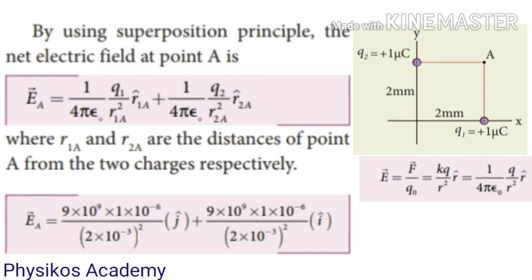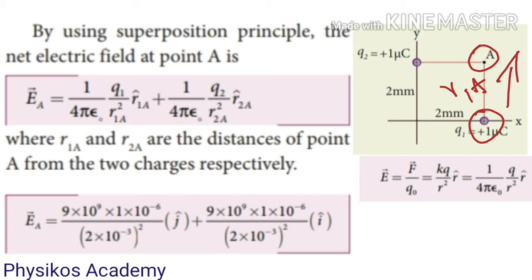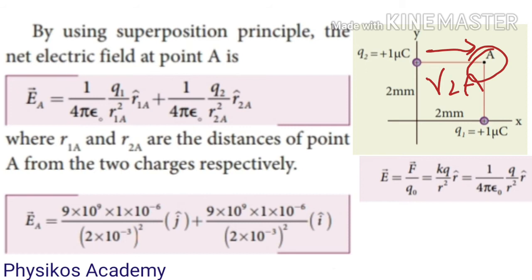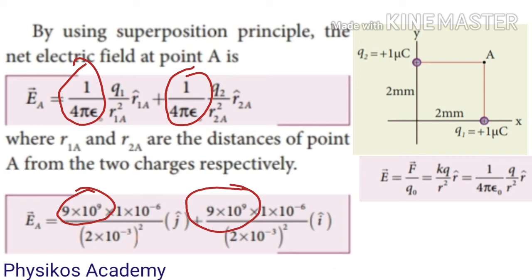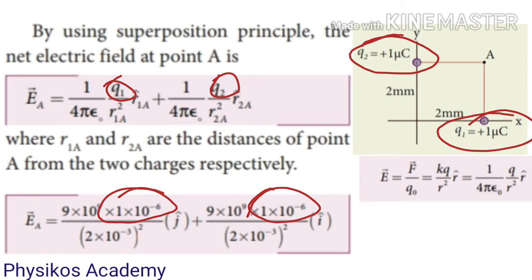To find the electric field EA at point A, we apply the formula. The contribution from charge Q1 at distance R1A is: 1 over 4π epsilon-naught, Q1 divided by R1A squared, into R1A cap. The contribution from charge Q2 at distance R2A is: 1 over 4π epsilon-naught, Q2 divided by R2A squared, into R2A cap. The proportionality constant K equals 9 × 10⁹. Substituting: charges Q1 and Q2 are both 1 microcoulomb, equal to 1 × 10⁻⁶ C.